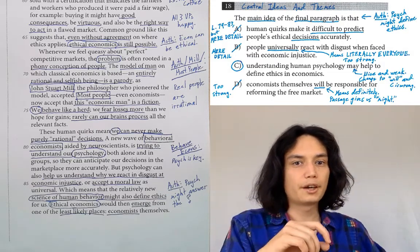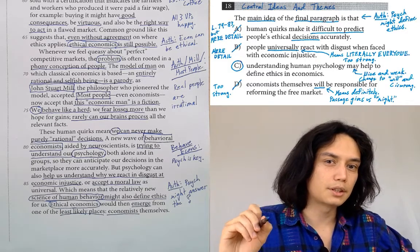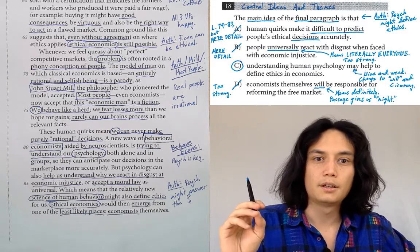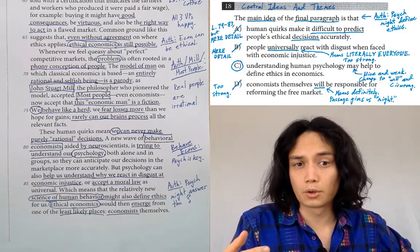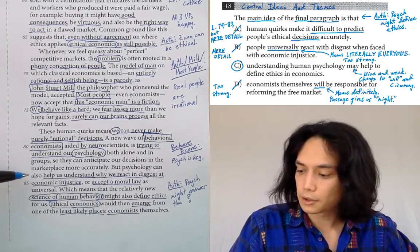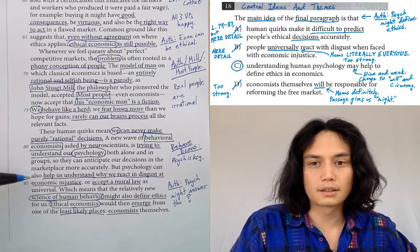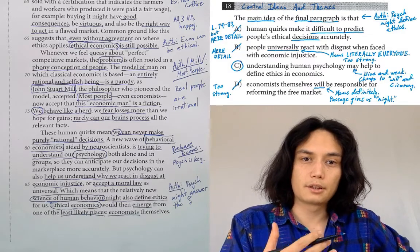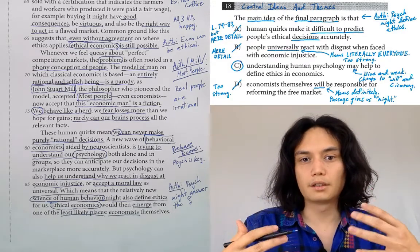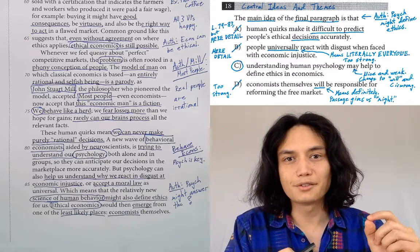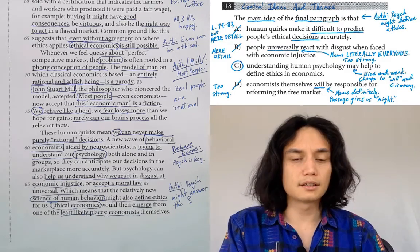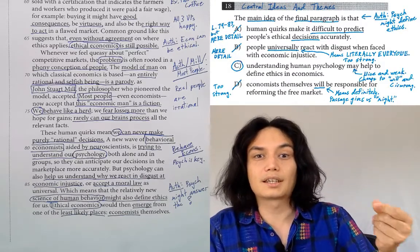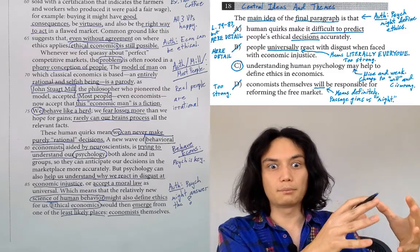Answer choice B: the main idea of the final paragraph is that people universally react with disgust when faced with economic injustice. Like answer choice A, this is a claim that happens in the paragraph — you might remember the words 'disgust' and 'economic injustice,' those buzzwords are in here. The author says psychology can help us understand why we react in disgust at economic injustice. So people do react in disgust at economic injustice — that's something that happens in the paragraph. But again, that's not the main point of this paragraph. In fact, in the sentence itself, it's not even the main point of the sentence. The point of the sentence is that psychology is interesting because it can help explain this phenomenon.